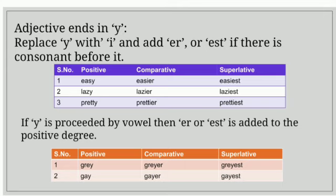If there is vowel before Y, we add ER or EST to the positive degree. For example, grey, G-R-E-Y. There is E before Y. So, comparative degree will become greyer and superlative degree will become greyest.